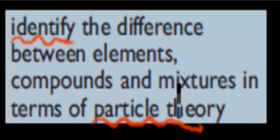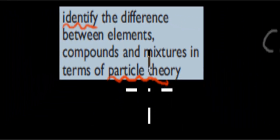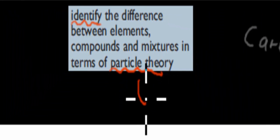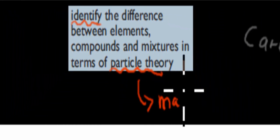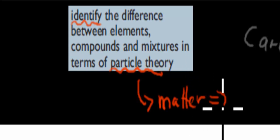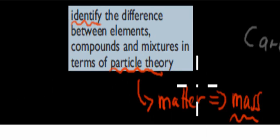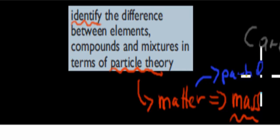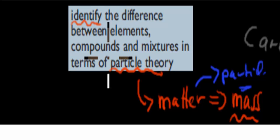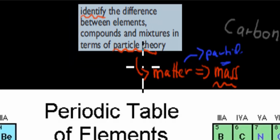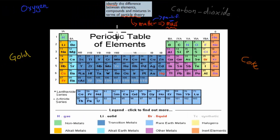Before I start, I'll quickly go over what the particle theory actually is. The particle theory is all about matter. Anything that has matter has to have mass, and most of the things around us have some sort of mass. What this particle theory is saying is that anything that has matter or mass consists of particles, and these particles can be either elements or compounds, or a mixture of elements and compounds.